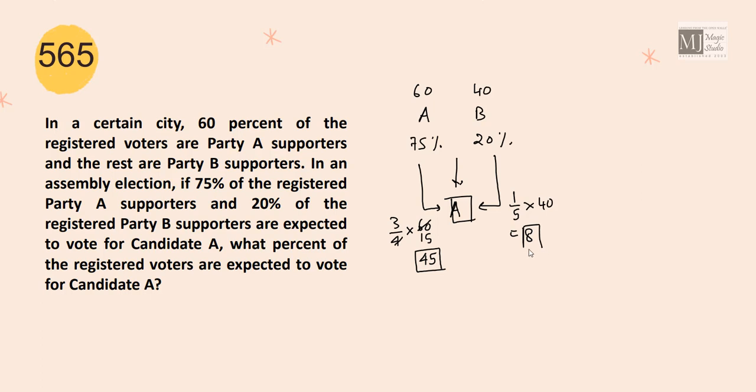So candidate A will get 3/4th of 60, that is 45% vote from party A and he will get 20% is 1/5th, 1/5th of 40, that is 8 votes from supporters of party B. So in total, he will get 45 plus 8, that is 53 votes out of 100, but in percentages, then it would be 53%.